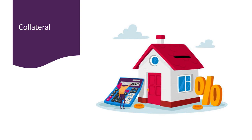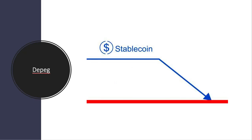The prices of stablecoins stay pegged because of collateral. When you want to buy one dollar's worth of stablecoin, you need one dollar's worth of cash. This applies to all currencies. If one dollar of stablecoin isn't backed with one dollar in cash, no one would use it, and the price would de-peg and head towards zero.